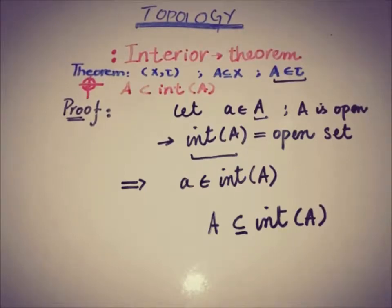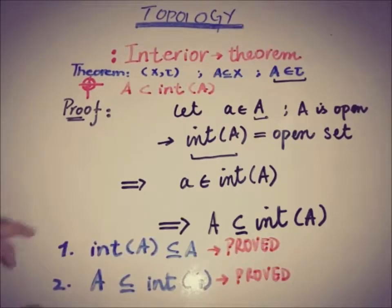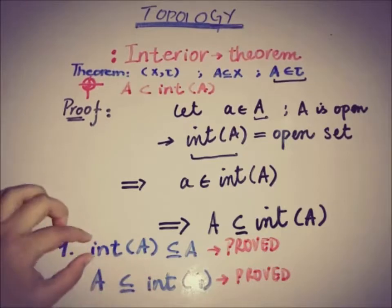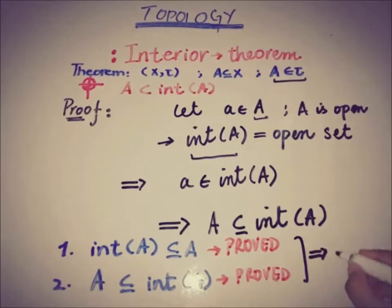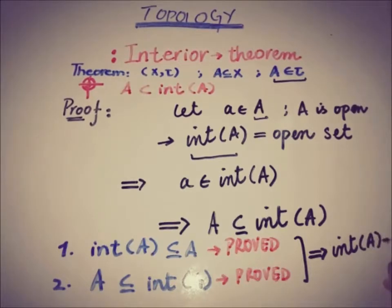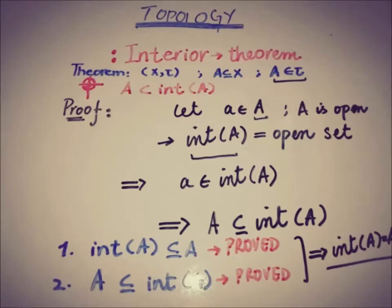This was our target and we have proved it. By combining both parts — interior of A is a subset of A by definition, and A is a subset of interior of A — both together imply that if A is an open set then the interior of A is equal to A. So this basic property of the interior of a set has been proved using the definition of the interior. That's all for now; looking forward to more such videos. You can subscribe to this channel to watch more upcoming videos. We will meet in the next video — till then, take care, goodbye.